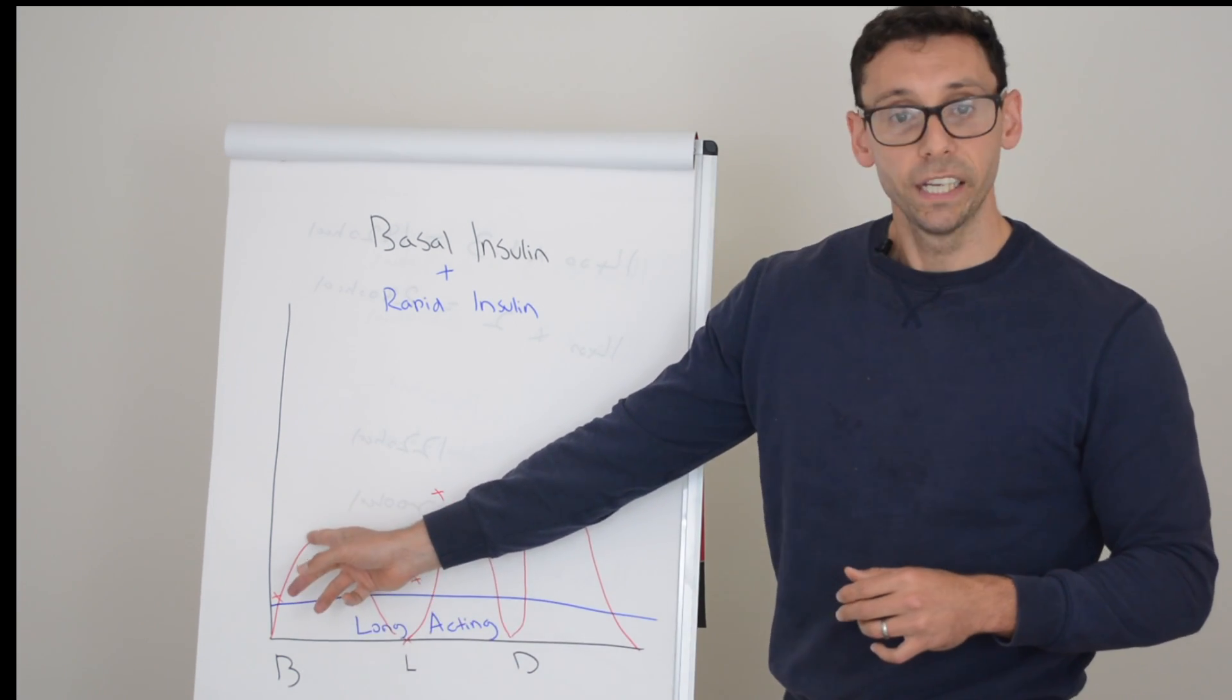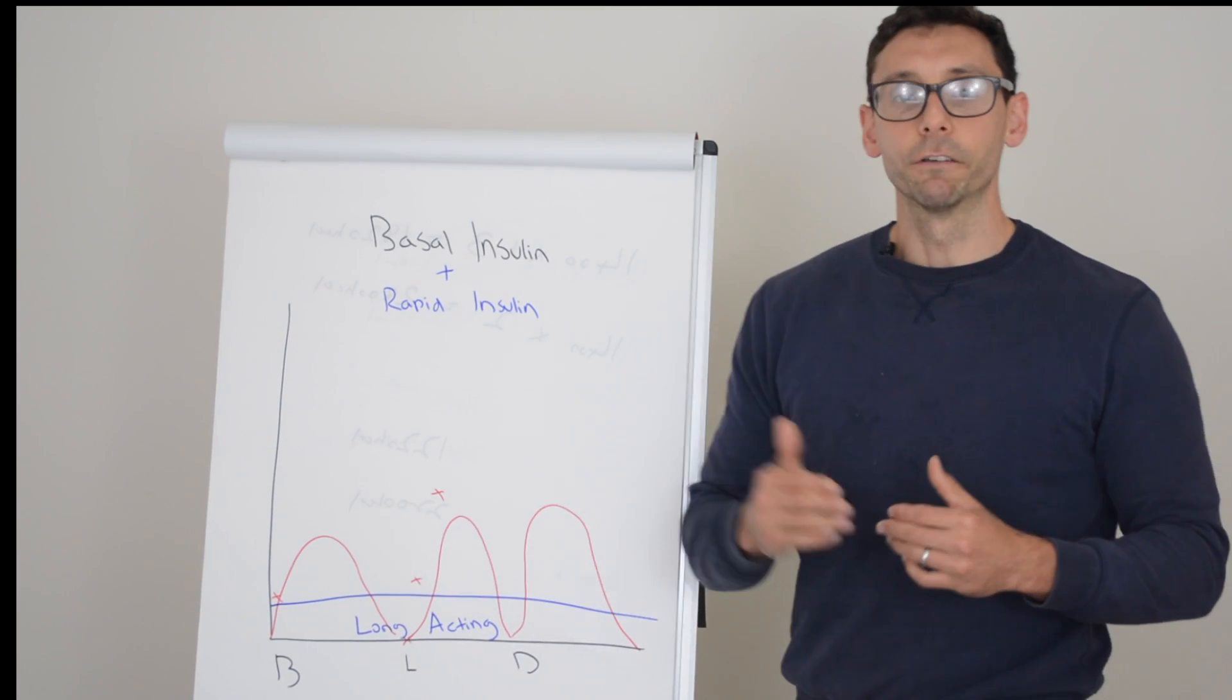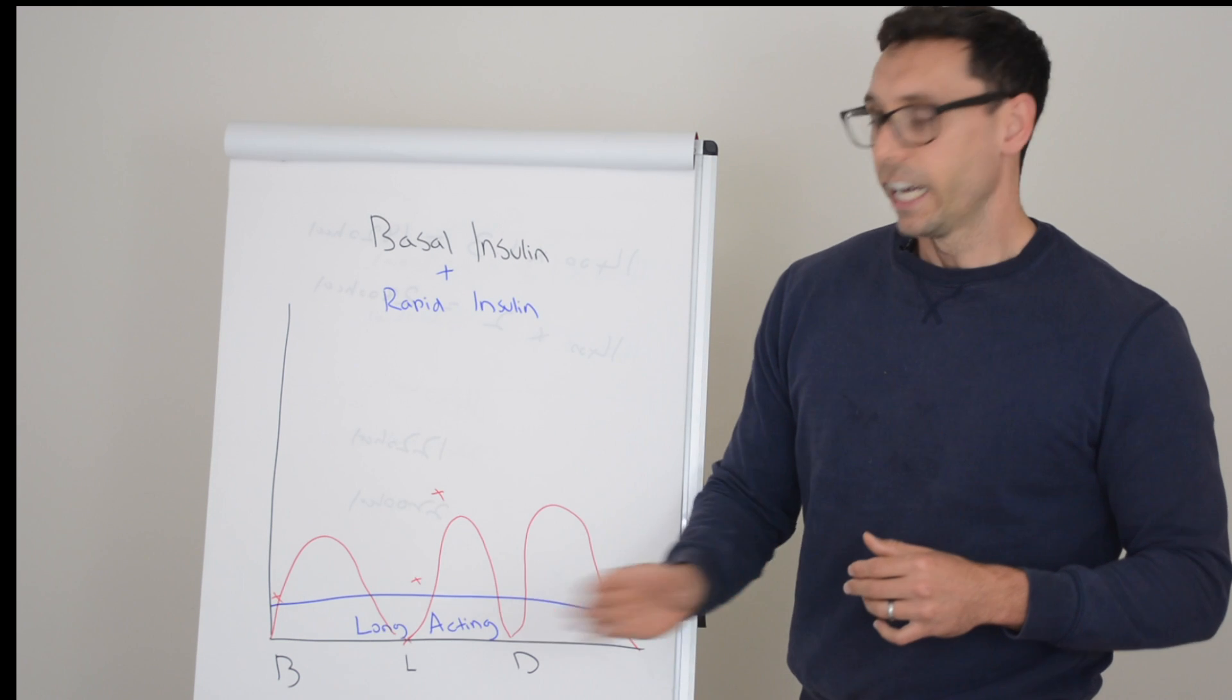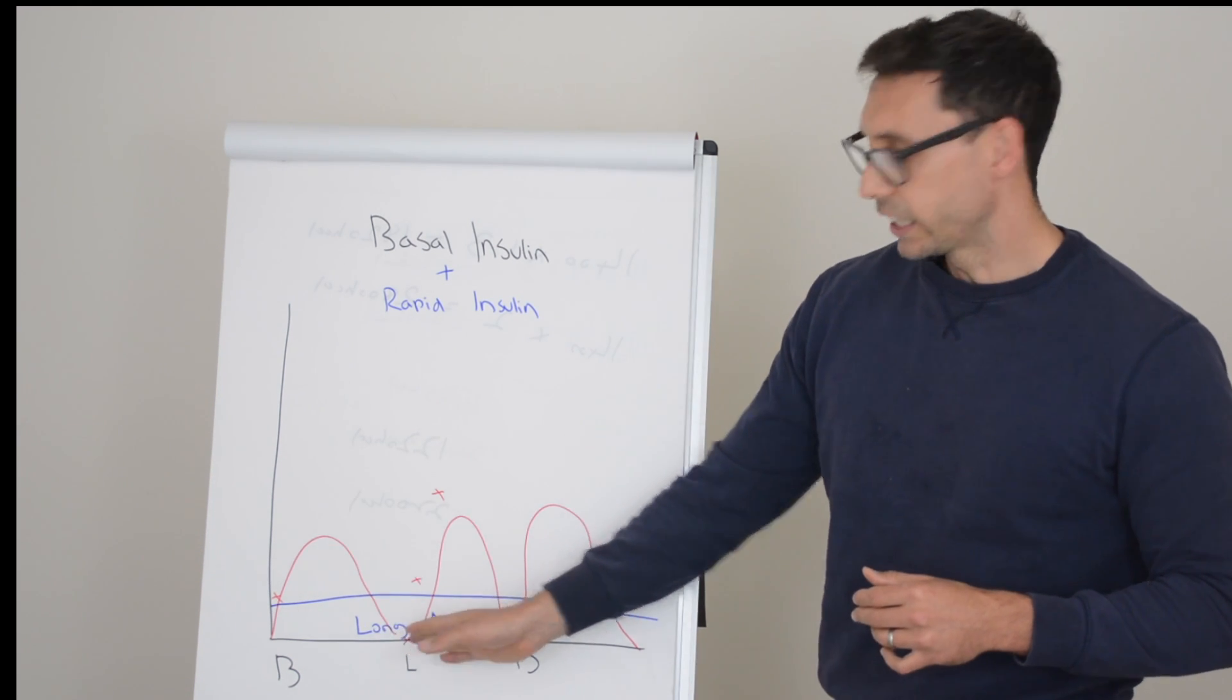The insulin will reach its peak at around an hour after injection and then after about four and a half hours it's out of your system.